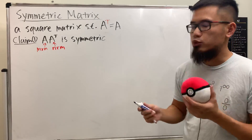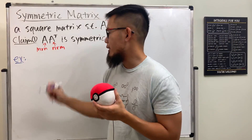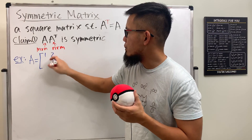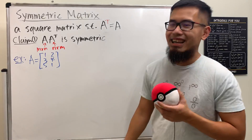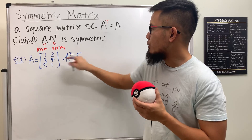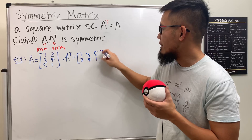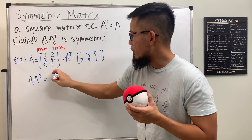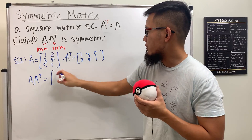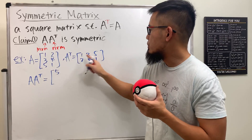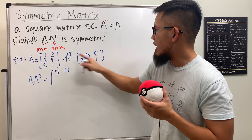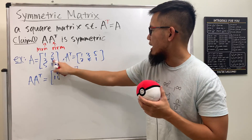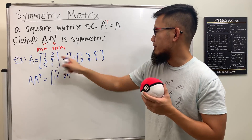Let me give you a concrete example so we can see what a symmetric matrix looks like. Let's say A is a 3 by 2 matrix: 1, 2, 3, 4, 5, 1. A transpose will be: 1, 2, 3 as the first row and 4, 5, 1 as the second row. Now computing A times A transpose — the first entry is 1×1 + 4 = 5; then 3 + 8 = 11; then 5 + 2 = 7; then 9 + 16 = 25; and 15 + 4 = 19.